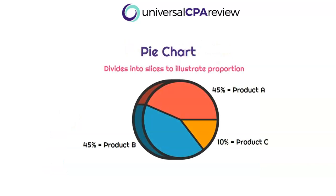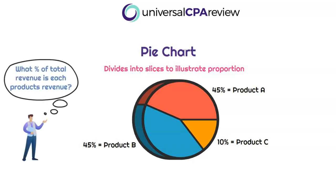Next we have a pie chart, which is similar to a tree map chart except it's in the shape of a pie. It allows us to illustrate proportion or composition. If a company had three products and we wanted to understand what percentage each makes up, we'd see product A and product B at 45% each, with product C making up the remaining 10%. This is a great way to illustrate the proportion of whatever you want to show.